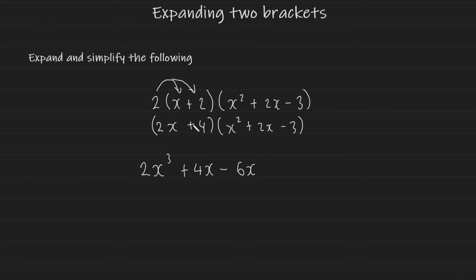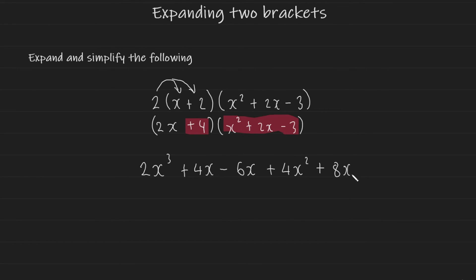Now let's do the same for the second term in the first bracket. We're going to take this plus 4 and multiply it onto everything in the second bracket. This is going to give us plus 4 multiplied by x squared, which is plus 4x squared. Positive 4 multiplied by positive 2x, which will give us plus 8x. Positive 4 multiplied by negative 3, which will give us minus 12.